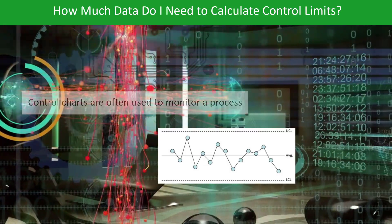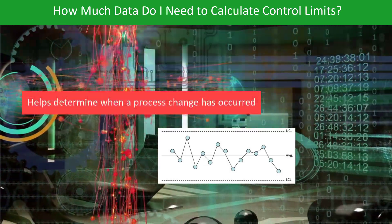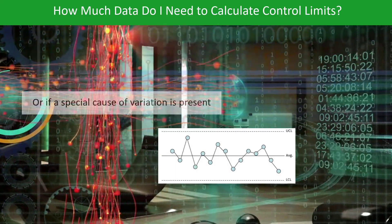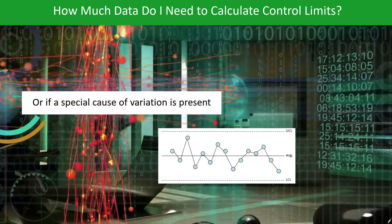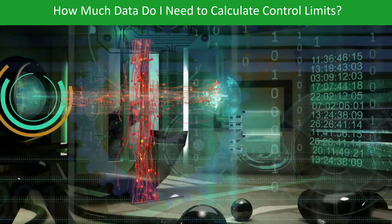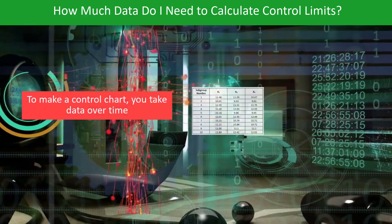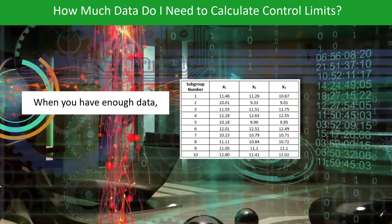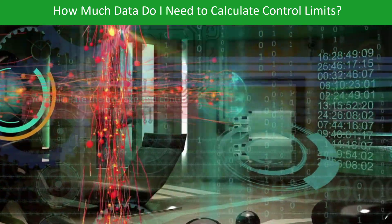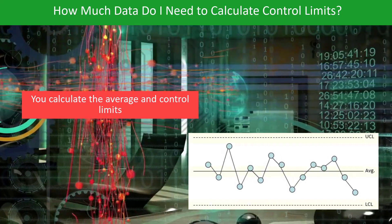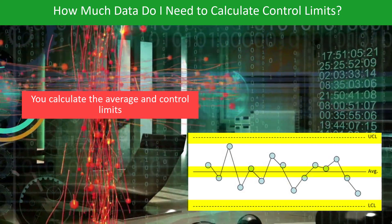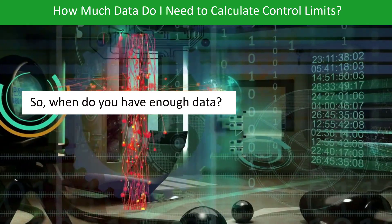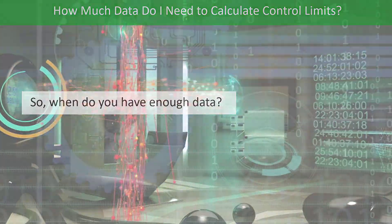Control charts are often used to monitor a process. You plot your data over time; it helps us determine when a process change has occurred, or perhaps if there is a special cause of variation present, like a point beyond the control limit. You make a control chart, take data over time, plot it, and when you have enough data, you calculate your average and your control limits, add those to the chart, and then interpret it. So when do you have enough data? That's the subject of this video.